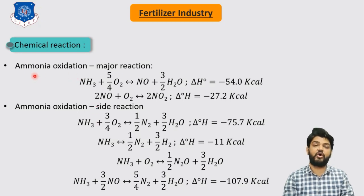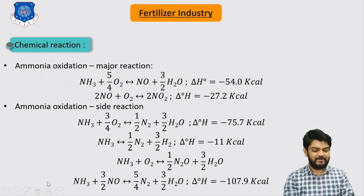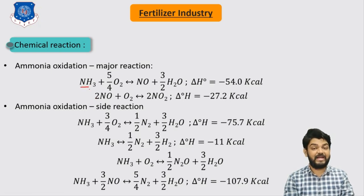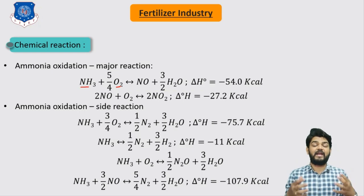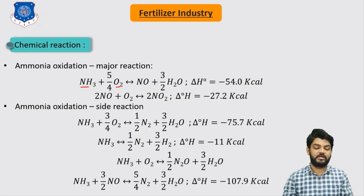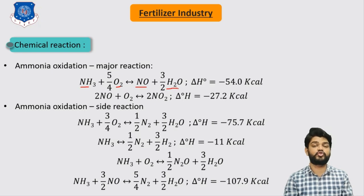Let's understand the first reaction: the oxidation of ammonia. We take ammonia and react it with oxygen present in the air. We supply ammonia and air together in order to produce NO. As we are producing NO, half a mole of water is also being liberated.